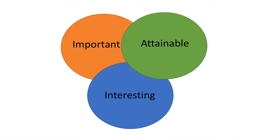Students who need all three — that something is important, interesting, and attainable — are the most difficult to reach and at the biggest risk of being underachievers, because it is difficult to have all three of those things present. It's not impossible. Ideally as the teacher you would create lessons that are interesting, important, and attainable to students, but you don't have a lot of power in how students place value. Students have most of that power, though you do have influence.